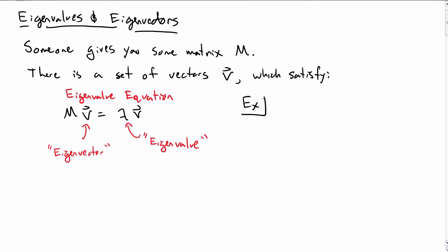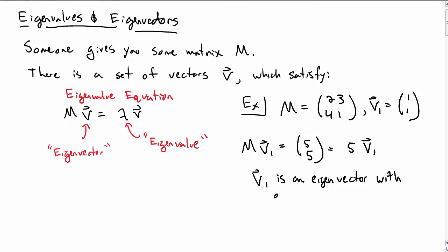Let's look at an example to see how this works. Consider the matrix M as (2, 3, 4, 1) and the vector V1 as (1, 1). I multiply M times V1, after some calculation I find that that's just 5 times V1. So in this case I would say that V1 is an eigenvector and it has an eigenvalue lambda 1 equal to 5.